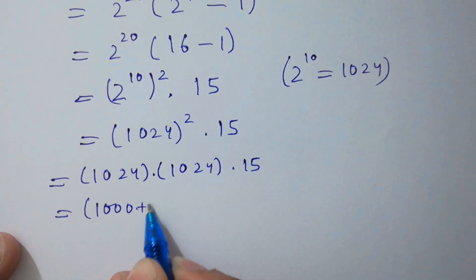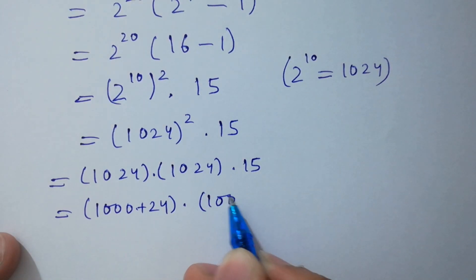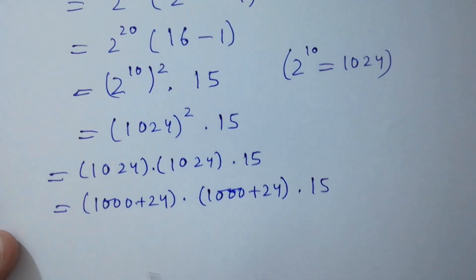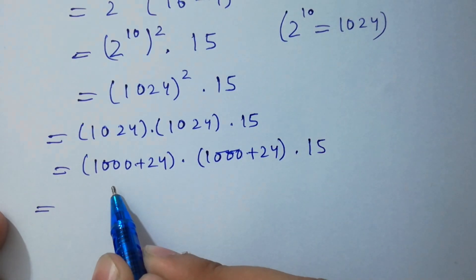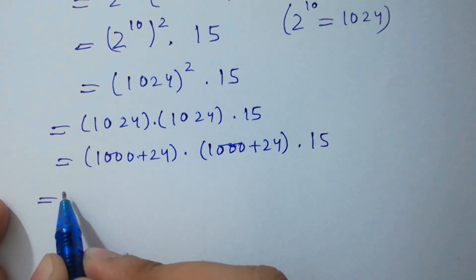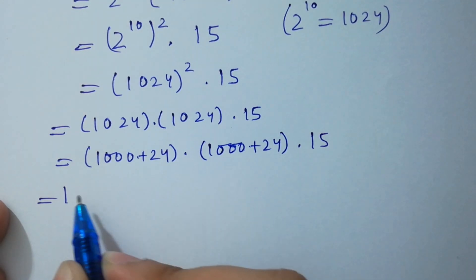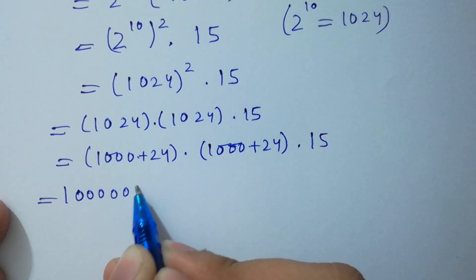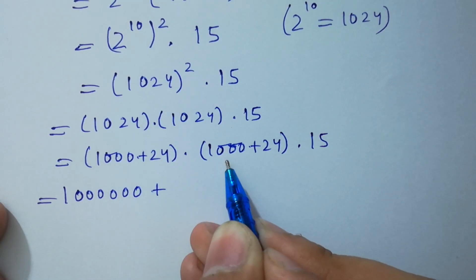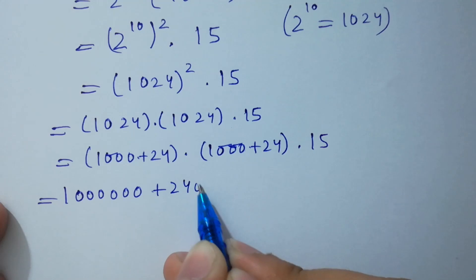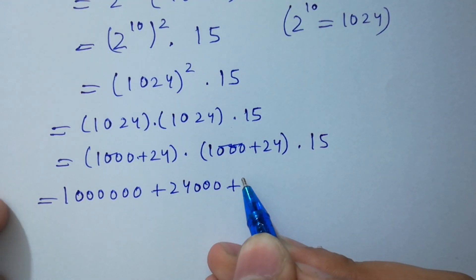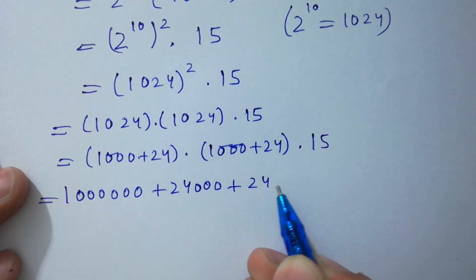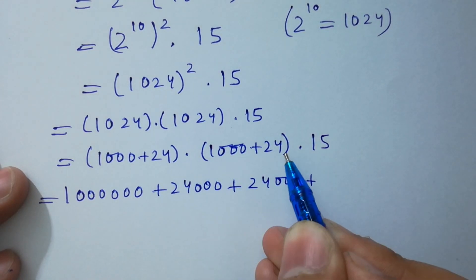Now we expand 1024 squared. We write 1024 as 1000 plus 24, so 1024 times 1024 gives us 1,000,000 — that's 1 followed by 6 zeros — plus 24 times 1000 which is 24,000, plus another 24,000, plus 24 times 24.